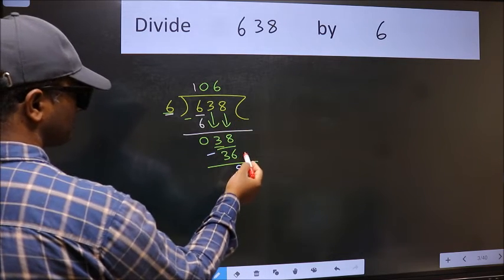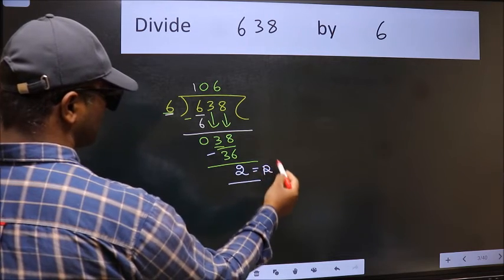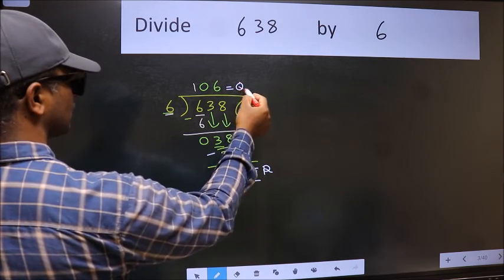No more numbers to bring it down. So we stop here. This is our remainder and this is our quotient.